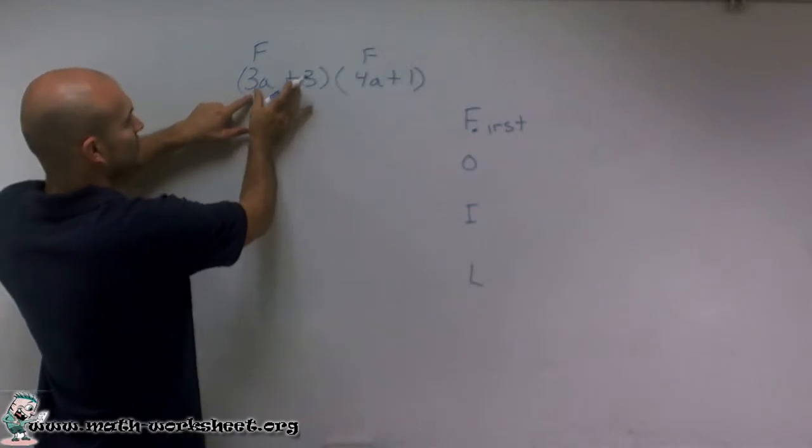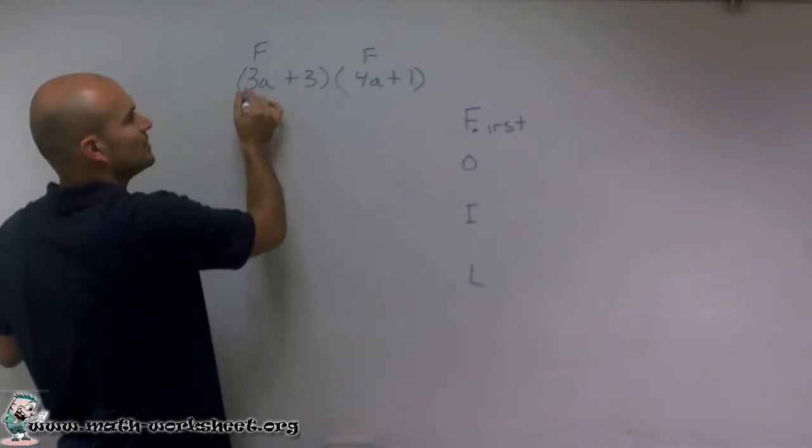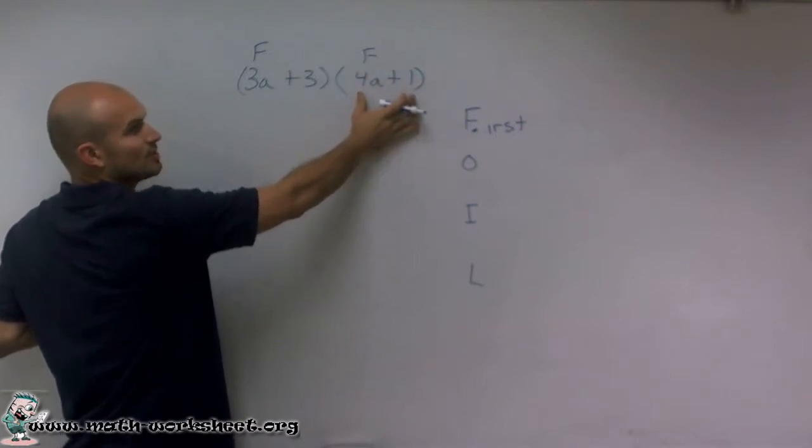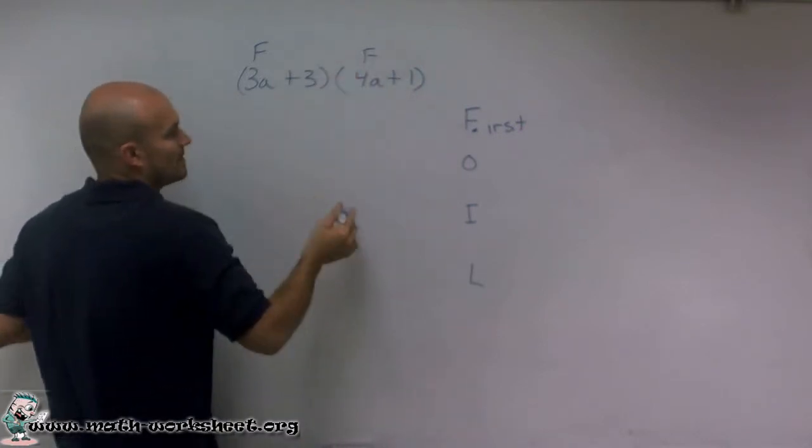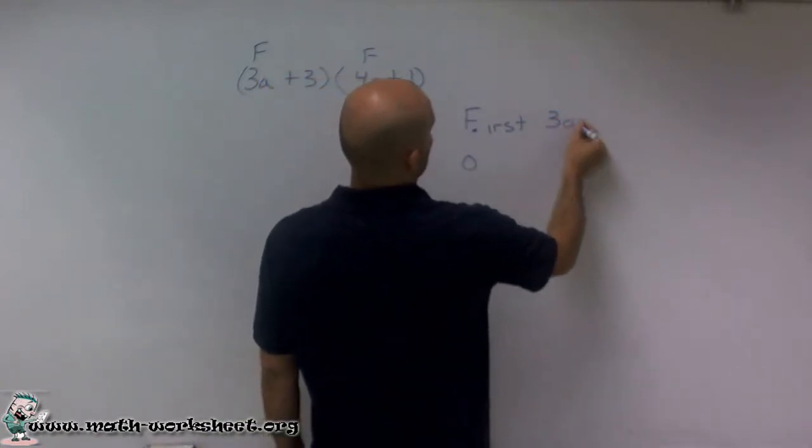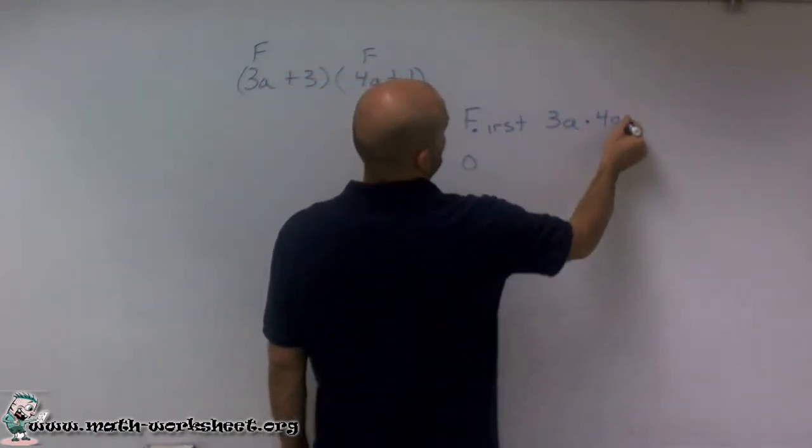Therefore, the first term, reading from left to right of this binomial, 3a plus 3, is 3a. As I read this binomial, 4a plus 1, the first term reading from left to right is 4a. So I'm going to have 3a times 4a.